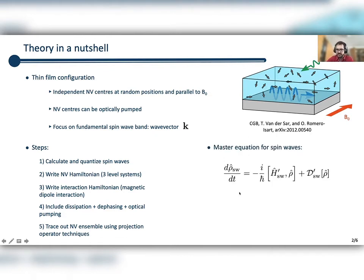We can write an equation that looks like this: it's like a von Neumann equation for the spin waves. We have a derivative of the spin wave density matrix equal to this commutator, which is the coherent evolution which contains a Hamiltonian of the spin waves and the dissipator of the spin waves which contains Gilbert damping. But both the Hamiltonian and dissipator also contain extra terms which come from the effective back action of this ensemble of NV centers.